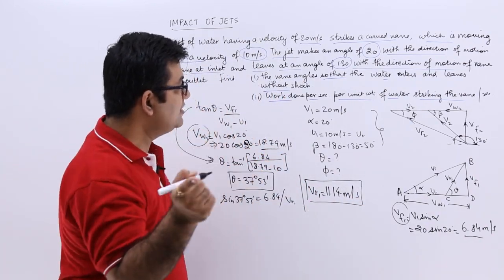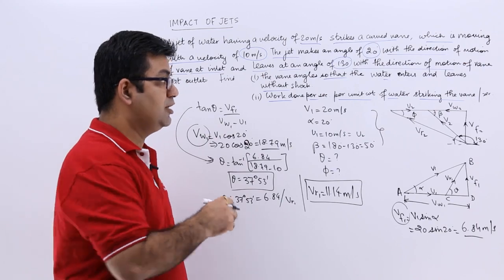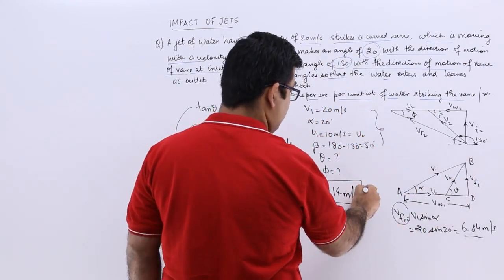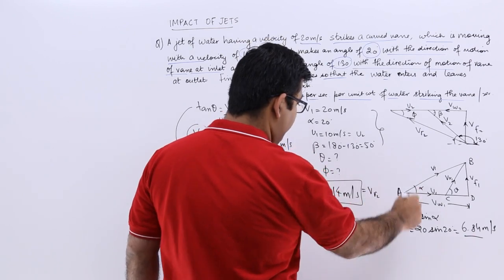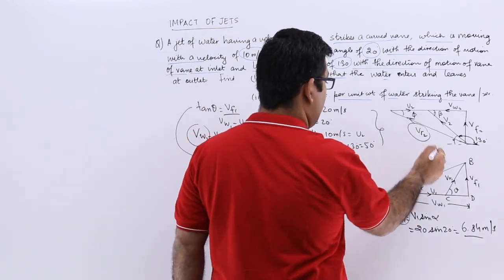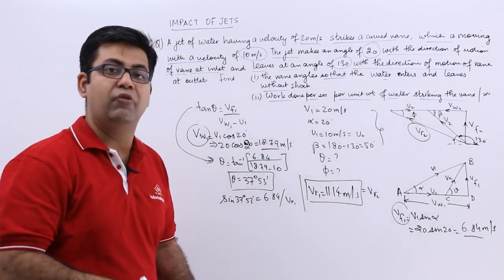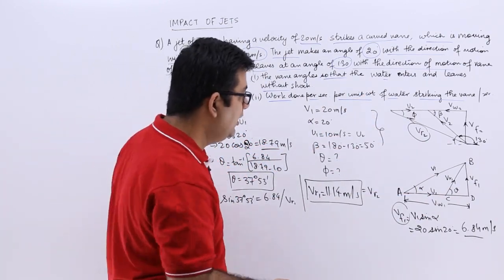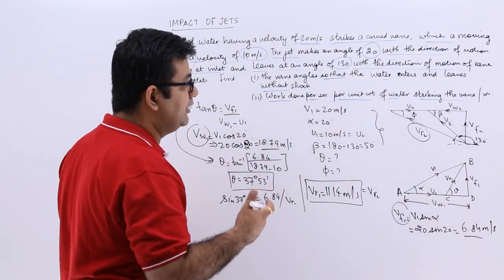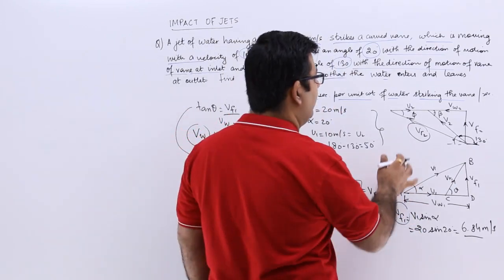Now the water is entering and leaving without shock means there is no loss. So VR1 will be equal to VR2. So this is equal to VR2 as well, and VF1 will be equal to VF2. So we have now got the value of VF2. Now we are moving towards the outlet velocity triangle because we have found out the blade angle or the vane angle at inlet theta. Now comes the time to calculate the value of phi.